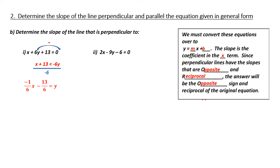This gives me the equation negative 1 over 6x minus 13 over 6 equals y. So, my slope in the original equation is negative 1 over 6. Now, I need the slope that is perpendicular to this, which is opposite and reciprocal. Since the original is negative, its opposite is positive. Since the original is 1 over 6, its reciprocal is 6 over 1. That would be my final answer.